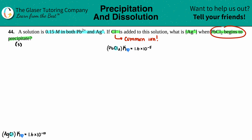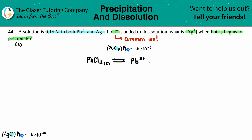With any Ksp equation we need to write the balanced dissolution equation. PbCl₂ is a solid that comes to equilibrium with Pb²⁺(aq) and Cl⁻(aq). Since both species have charges, they are aqueous. Checking the balance: there are two chlorines, so we put a 2 in front of Cl⁻. Now the equation is balanced.